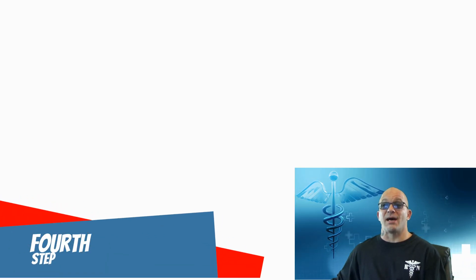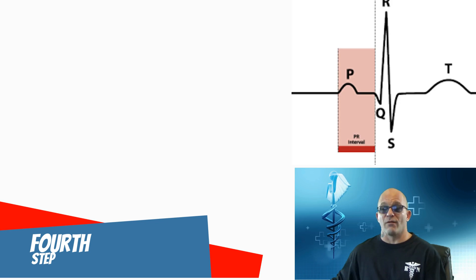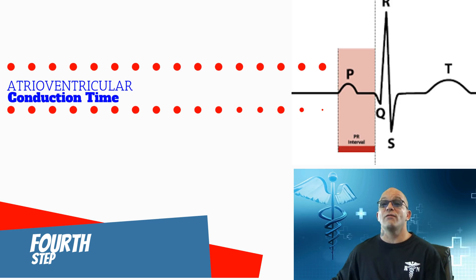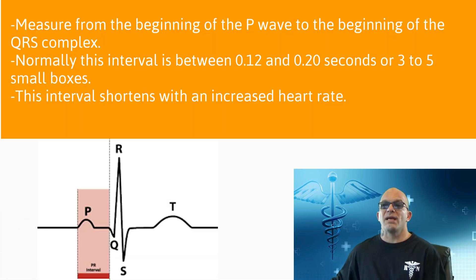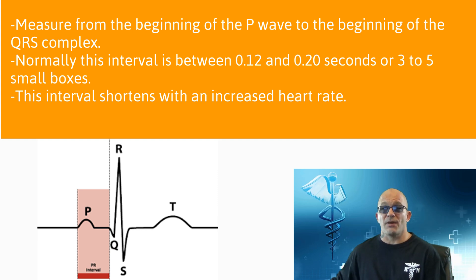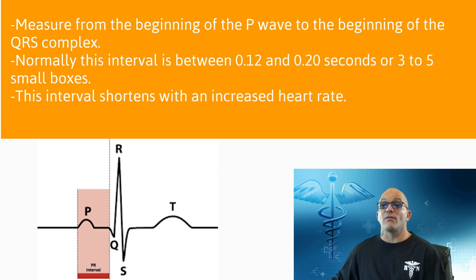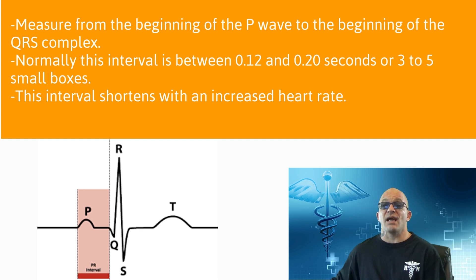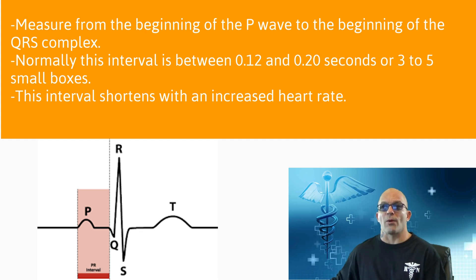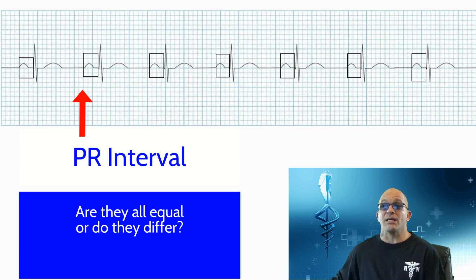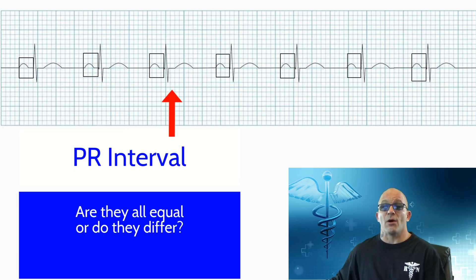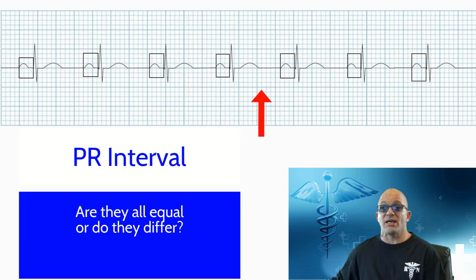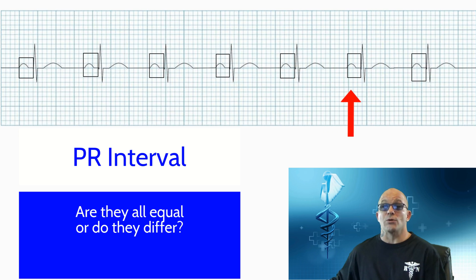The fourth step is to evaluate the PR interval, which indicates atrial-ventricular conduction time. We begin by measuring at the beginning of the P wave all the way to the beginning of the QRS complex. Normally, this interval is between 0.12 and 0.20 seconds, which equals about 3 to 5 small boxes. This interval shortens with an increased heart rate. We also need to measure the consistency of the PR interval across the EKG tracing — are they all equal or do the lengths differ?